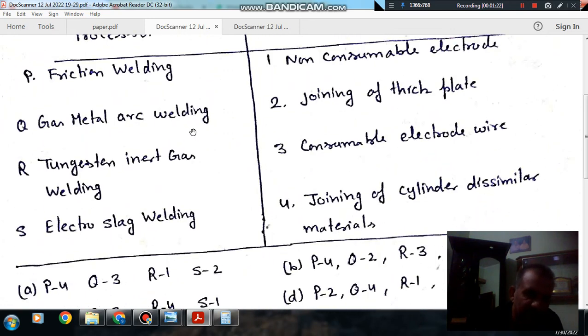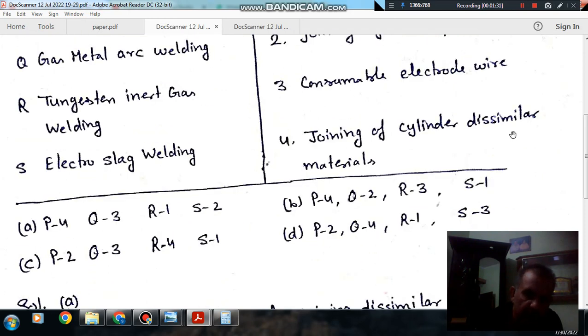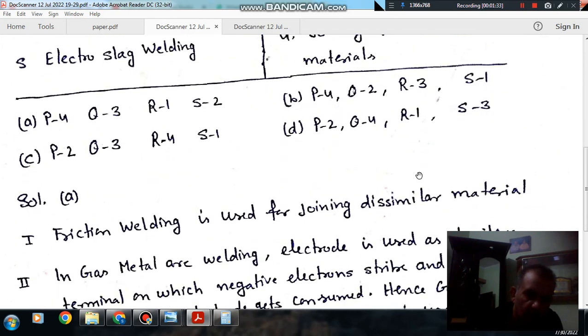And Q-3. Gas metal arc welding is a consumable electrode process.